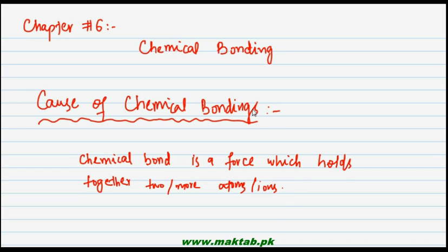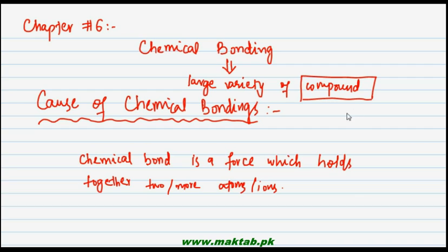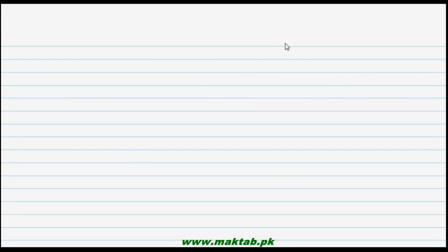Chemical bonding کی وجہ سے ہمارے پاس a large variety of compounds موجود ہیں۔ جب بھی دو یا دو سے زیادہ atoms یا ions ملتے ہیں تو جو چیز بنتی ہے that is a compound or molecules۔ Chemistry کے اندر جتنی بھی large variety of compounds ہیں those are all due to the presence of chemical bonding۔ So chemical bond is that force which holds together two or more atoms or ions to make a compound.